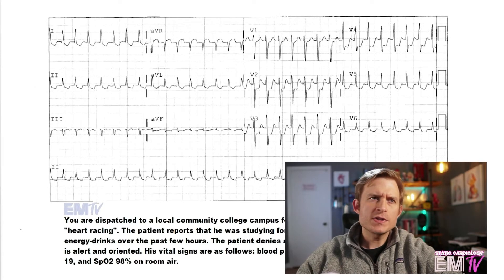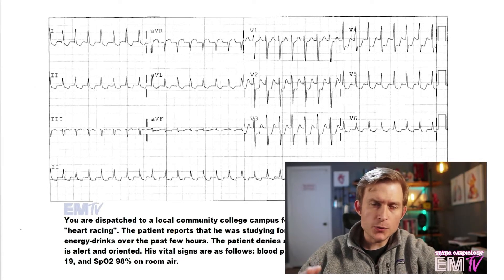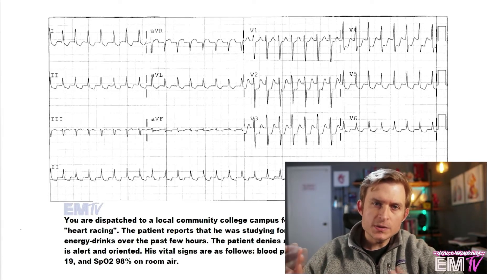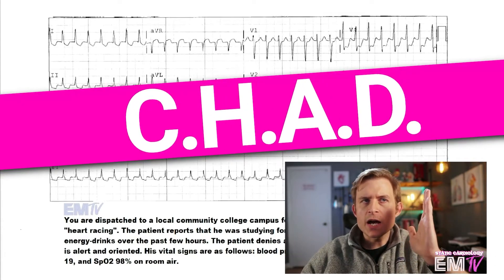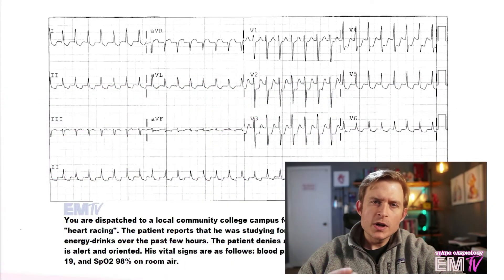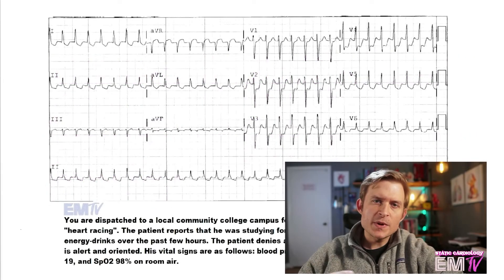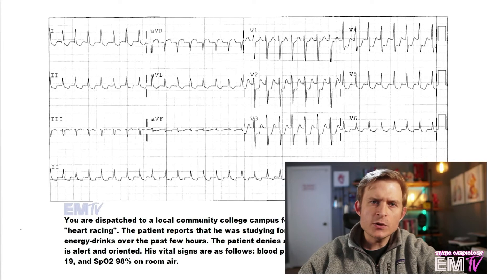The vast majority of your points in static cardiology are scored through correct treatment of this rhythm, so we have to determine if this patient is stable or unstable. For unstable criteria, I use the acronym CHAD: cardiac insufficiency, hypotension, alteration in mental status, and dyspnea. Based on my patient's current presentation as well as his vital signs, he meets none of the CHAD criteria.